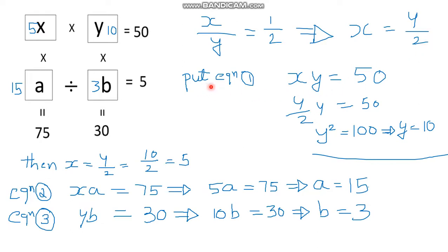Now put X equal to Y by 2 into equation number 1, that is X times Y equals 50. In place of X, substitute Y by 2, so it becomes Y squared divided by 2 equals 50, which gives Y squared equals 100. Therefore Y is equal to 10.